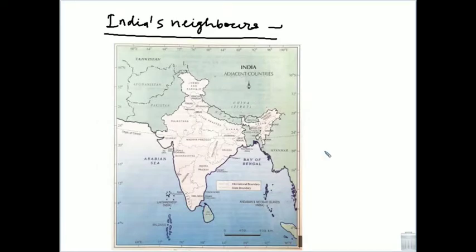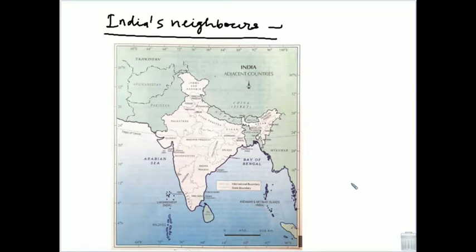We can see India's map on the screen here. In the map you can see many neighboring countries — Pakistan, China, Afghanistan, and Nepal. These are the neighbor countries. Even to the south you can see Sri Lanka and the Maldives as India's neighbors.